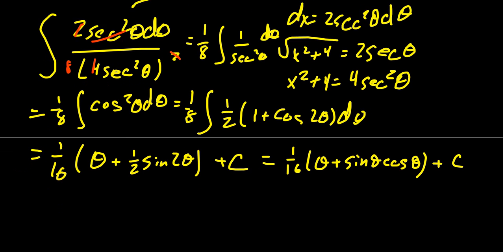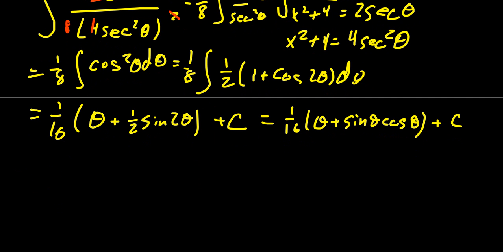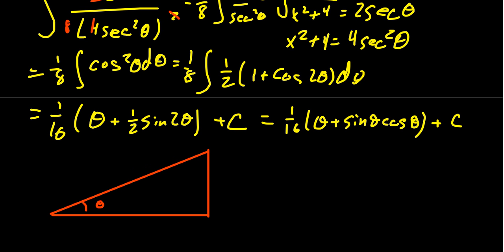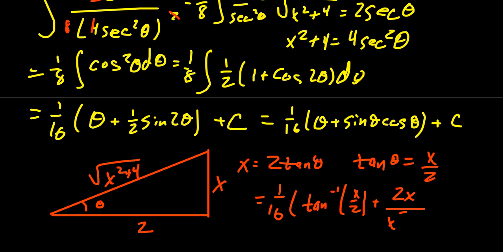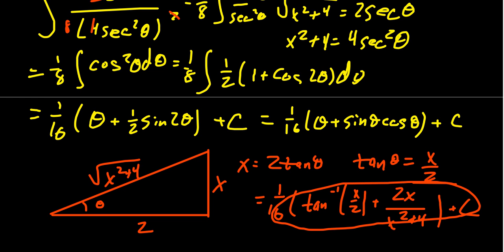Since we never drew the triangle: our substitution was x = 2 tan θ, meaning tan θ = x/2 (opposite over adjacent). The hypotenuse is therefore √(x² + 4). So θ = arctan(x/2), sin θ = x/√(x² + 4), and cos θ = 2/√(x² + 4). Putting it all together: sin θ cos θ = 2x/(x² + 4). So the antiderivative of that final integral is one-sixteenth times [arctan(x/2) + 2x/(x² + 4)].